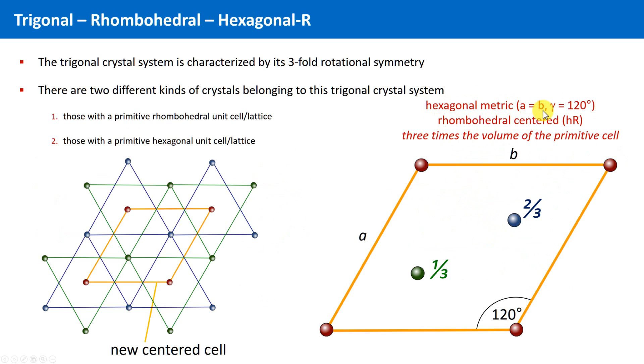A equals b, c is not specified, and the angles are alpha equals beta equals 90 degrees, and gamma is 120 degrees.